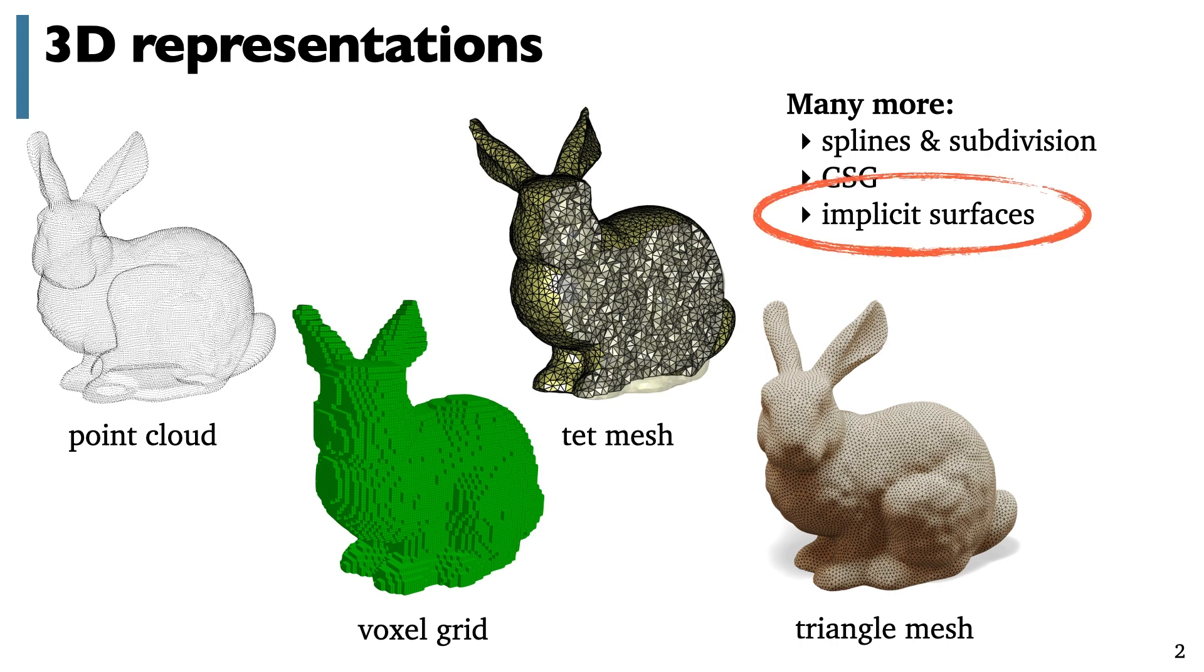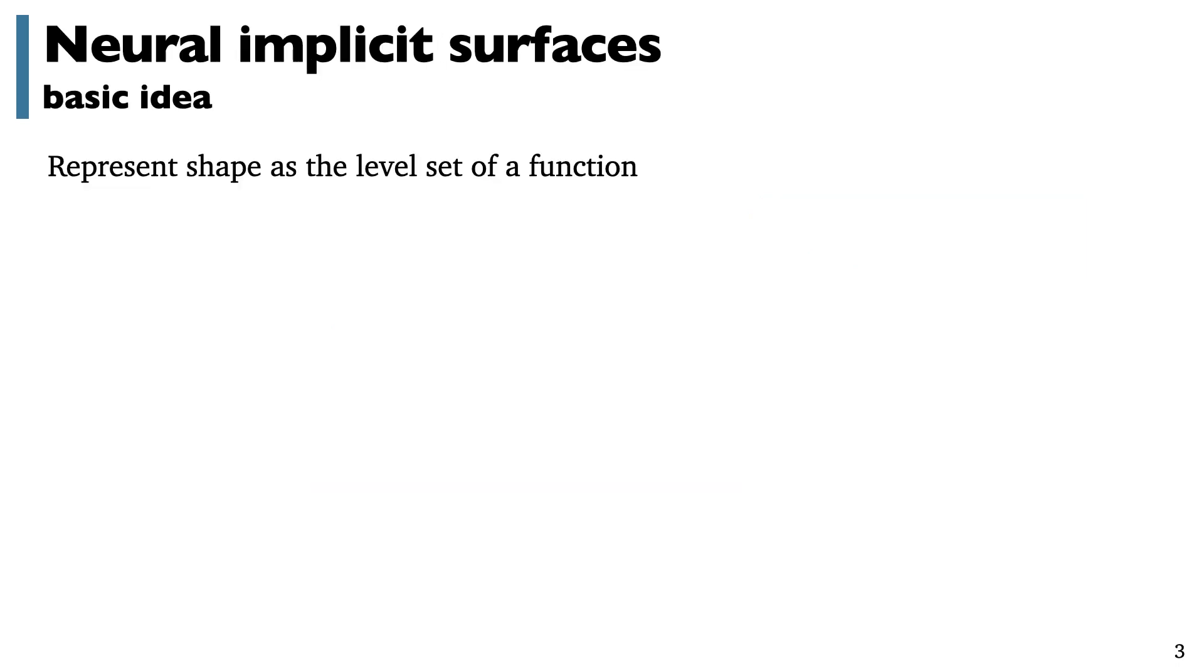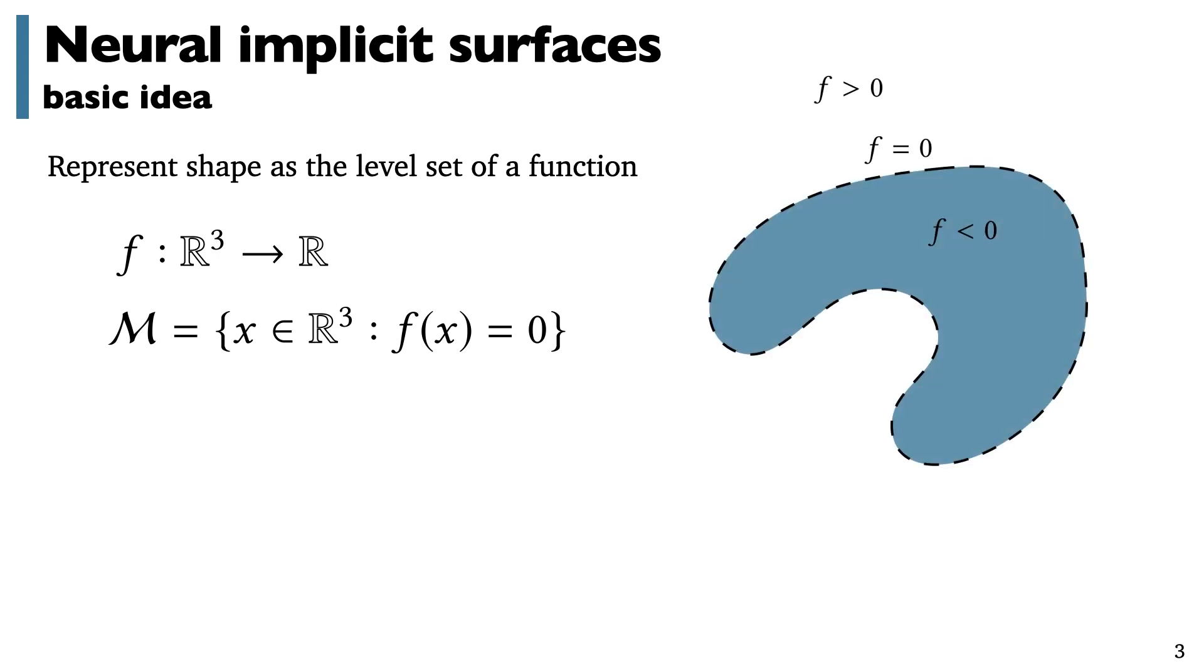Today we're going to look at a particularly promising kind of implicit surface representation and see some new computational tools that help us really unlock its power. The basic idea of implicit surfaces is to represent a shape via the level set of some function. This function takes 3D xyz coordinates as input and produces a real number as output, and by convention we say that the points where this function outputs a negative value are inside the shape. In neural implicit surfaces, this function is a neural network.